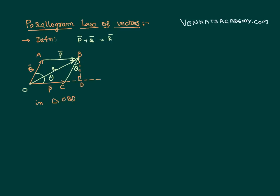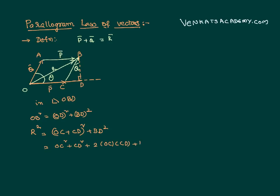I can write OB² equals OD² plus BD², where OB is the resultant I want to calculate. I can write OD as the sum of OC and CD, so: OB² = (OC + CD)² + BD². Expanding: OC² + CD² + 2·OC·CD + BD². It is clear that BD² + CD² equals BC², which is nothing but Q². And OC² is nothing but P².